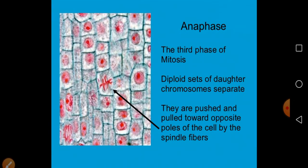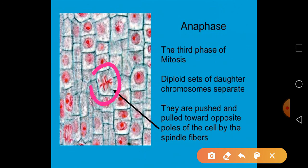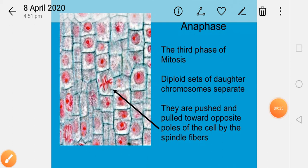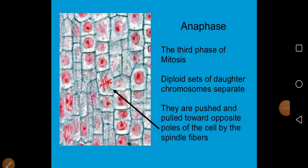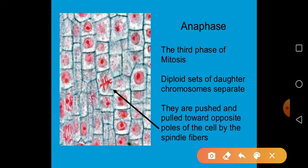During anaphase, the diploid set of daughter chromosomes is separated and chromosomes are segregated equally into the daughter cells. The chromosomes are pulled and pushed toward the opposite poles of the cell by spindle fiber shortening. This pulling of chromosomes to opposite poles is the key event of anaphase.